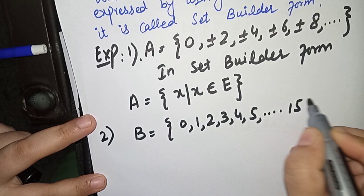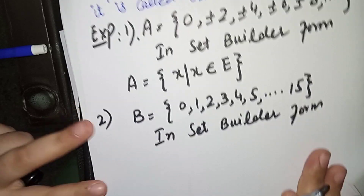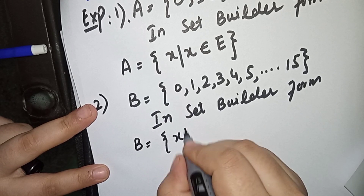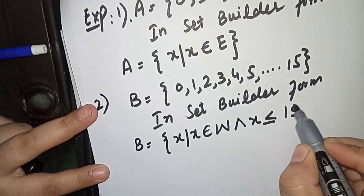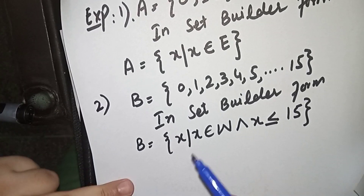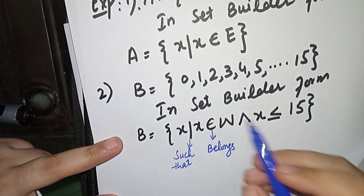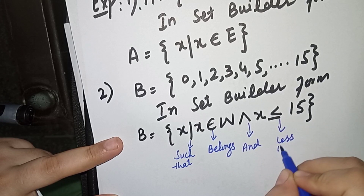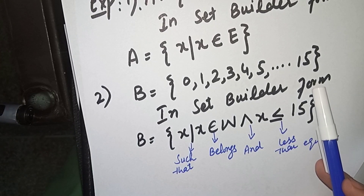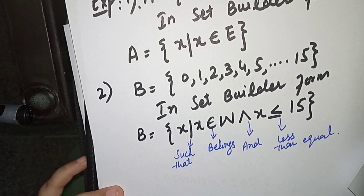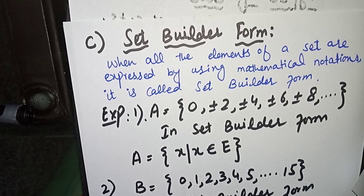A second example: B = {0, 1, 2, 3, 4, 5, ..., 15}. In set builder form, this is written as B = {x | x ∈ W, x ≤ 15}. Here, W denotes whole numbers — the set starts from 0, and whole numbers start from 0. We write x ≤ 15 (with the equal sign) because 15 is included in the set. The notation 'ε' (epsilon) represents 'belongs to,' and ≤ means less than or equal to. You can take a screenshot of these examples.